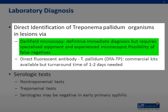The advantage of dark field microscopy is a definitive, immediate diagnosis. There are several disadvantages: the test requires specialized equipment and an experienced microscopist; there can be possible confusion with other pathogenic and non-pathogenic spirochetes; the test must be performed immediately; it is generally not recommended for oral lesions; and there is a possibility of false negatives.